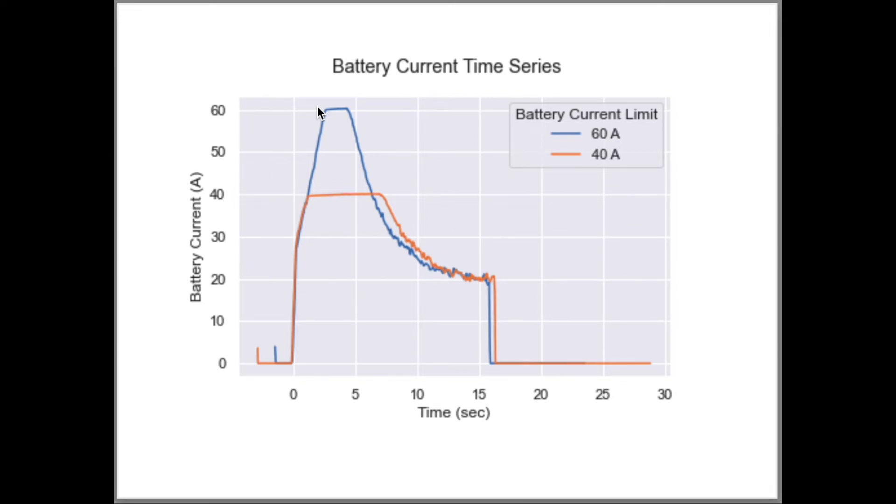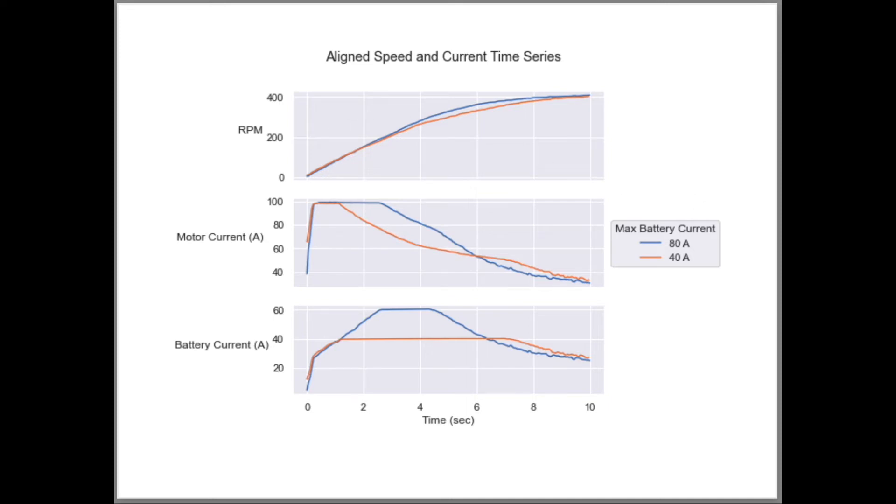Looking at the speed and current graphs on the same x-axis, we see that a higher battery current leads to a higher sustained rate of motor current and therefore higher torque and acceleration in the mid-RPM range.